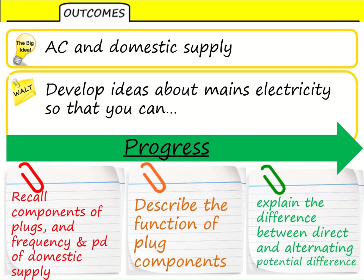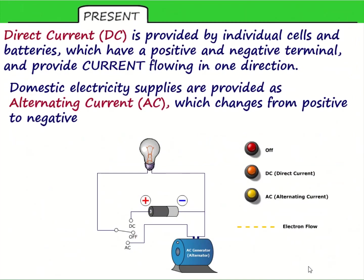Today we're going to take a look at AC electricity and the domestic or mains supply. We'll look at what parts are in a plug, and the differences between frequency and potential difference, which have been confused by many students in recent quizzes. We'll look at the function of the different parts of the plug, and discuss the difference between direct and alternating PD and how that leads to AC and DC currents.